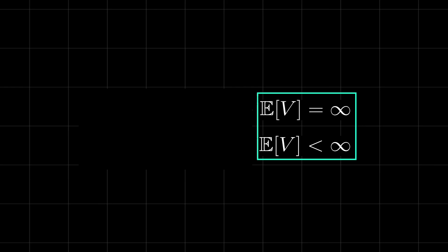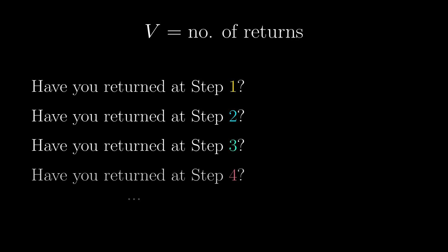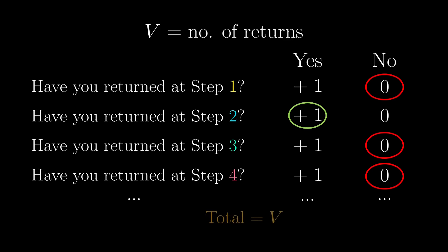To do that, we need a final trick. Another way of thinking about V, the number of returns, is that it is a tally. We first ask the questions, have you returned at step n? If yes, then we add 1 to the tally, and if not, then we don't do anything to it. Once we answered all these questions, we add up the total, and we obtain V by just adding up all these plus 1s.